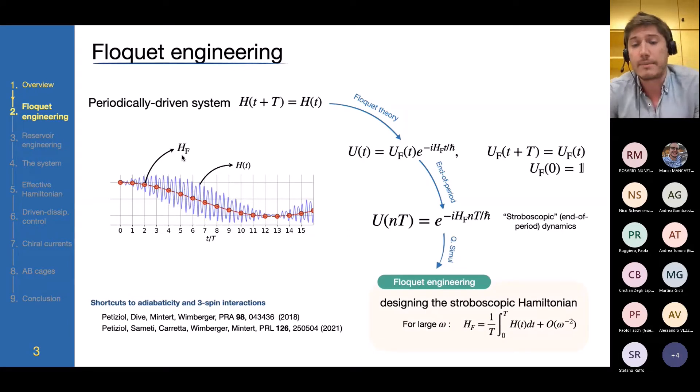The result is that if we probe the dynamics only at stroboscopic times, so only at multiples of the driving period, the dynamics looks as if it was generated only by this stroboscopic Hamiltonian. And crucially, this stroboscopic Hamiltonian can be very different and have very different properties from the original Hamiltonian. The general idea behind Floquet engineering is designing periodic controls that generate some desired effective Hamiltonian. There are recipes to compute and estimate such a Floquet Hamiltonian, especially in the limit of large driving frequencies. This Floquet engineering can be used for quantum simulations. For instance, during my PhD in Parma, I studied applications to so-called shortcuts to adiabaticity protocols and for the engineering of interactions beyond pairwise coupling.